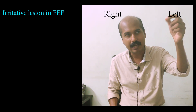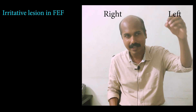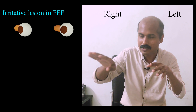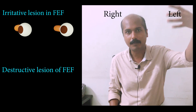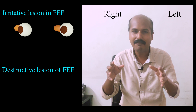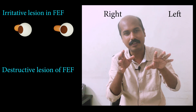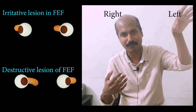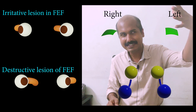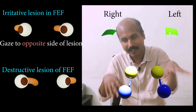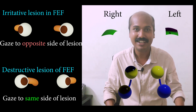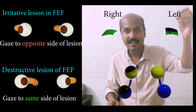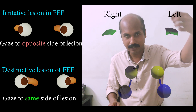If there is an irritative focus in the frontal eye field — such as a gliosis or seizure focus — the eyes will tend to drift toward the opposite side during a seizure. If there is a destructive lesion, the frontal eye field is destroyed and no input is generated, causing the eyes to drift toward the ipsilateral side due to lack of stimulation. A useful mnemonic: an irritative focus drives the eyes to look opposite, while a destructive lesion causes the eyes to look toward the side of the lesion.